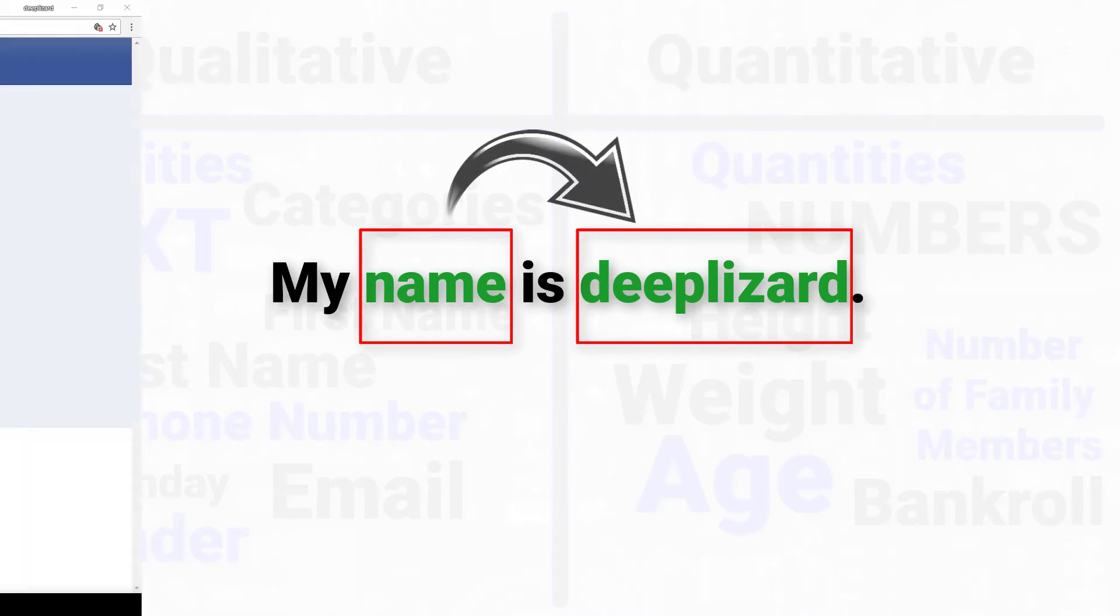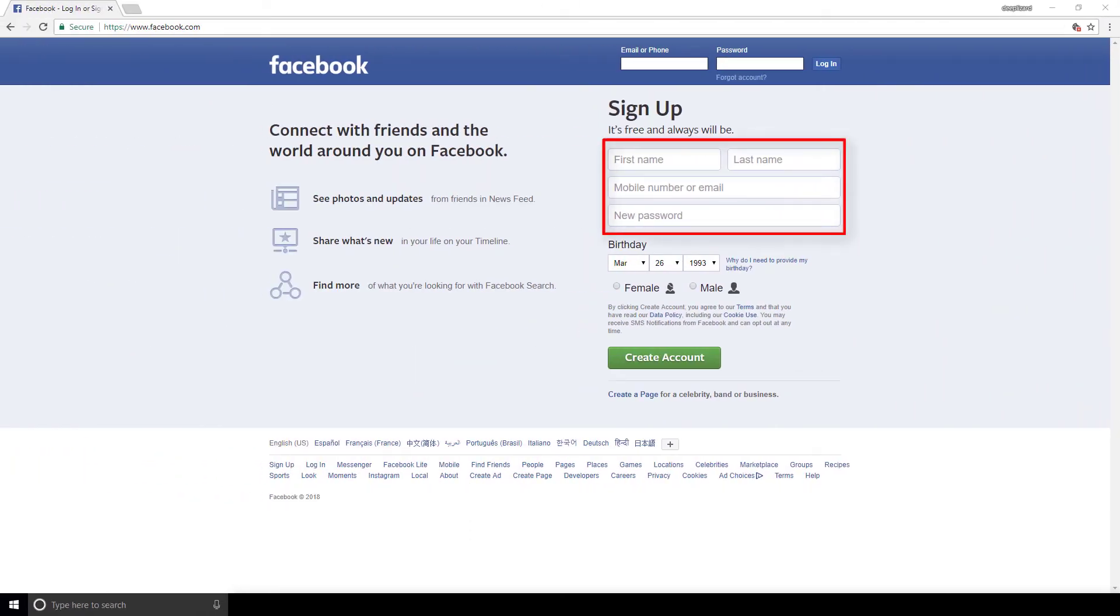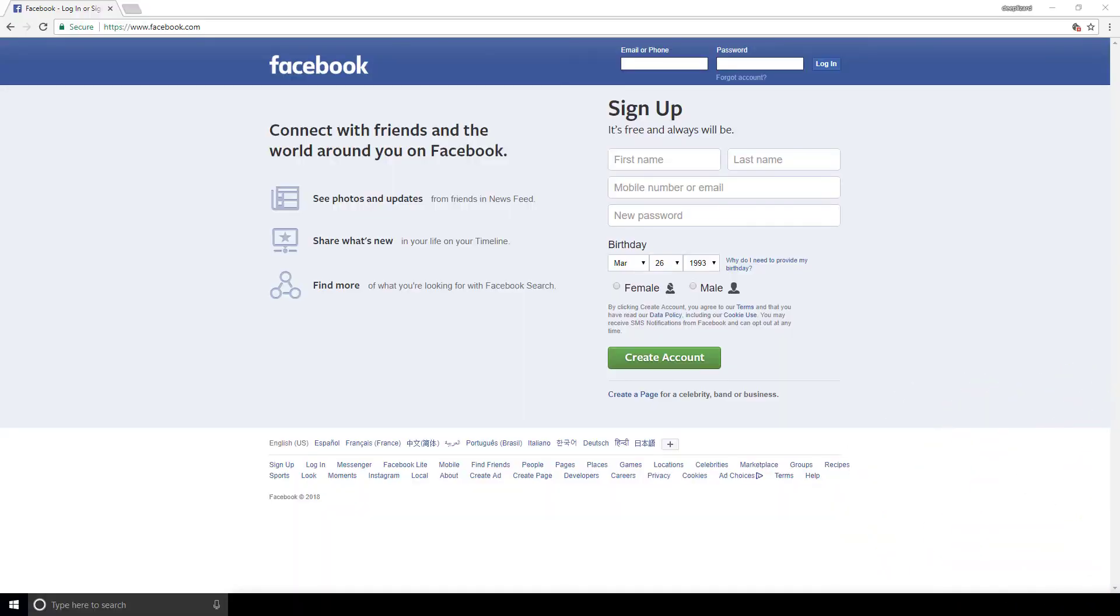If we look back at the Facebook signup program, we can see the data the program wants to reference. These are the labels or the words that will refer to the text values we type in. The moment we type in deep lizard for the first name, the data is created and will exist inside the program and can be accessed through the reference first name. Once the program has this data, it can do whatever it wants with it. It can store it, manipulate it, or send it off to a faraway land. When the program wants to do any of these things, it uses the reference first name to access the value deep lizard.